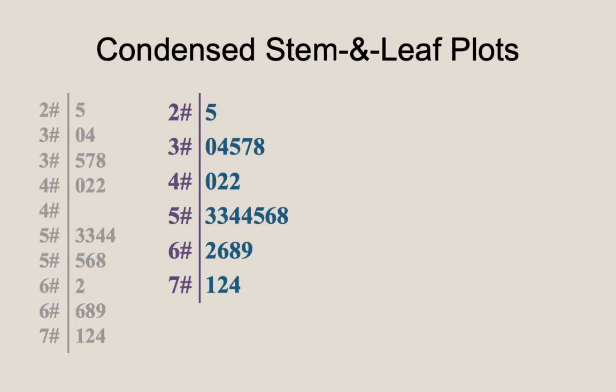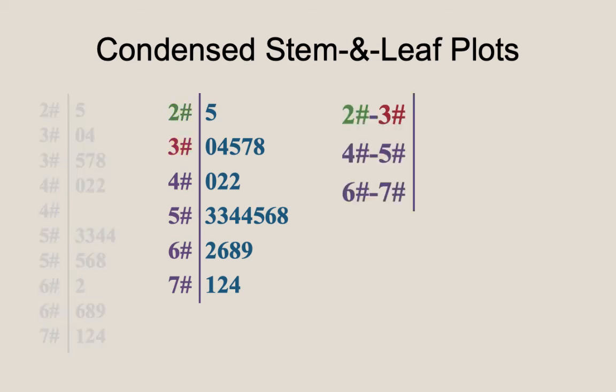Now let's go in the other direction. Let's condense the stem-and-leaf plot. In other words, let's make it take up less space. What we will do here is collapse the first two stems from our original stem-and-leaf plot into one row, collectively the 20s and the 30s.